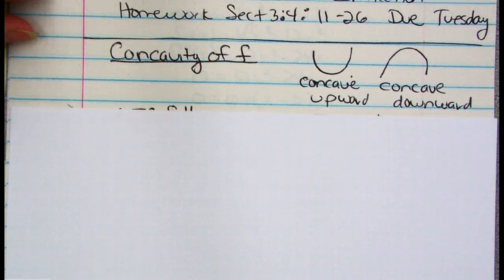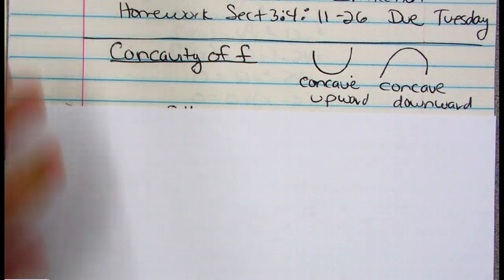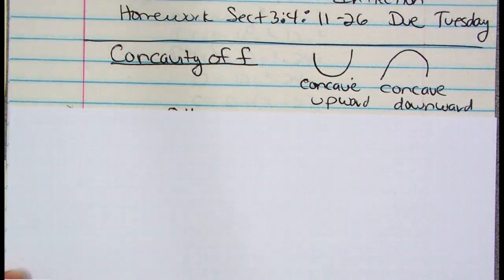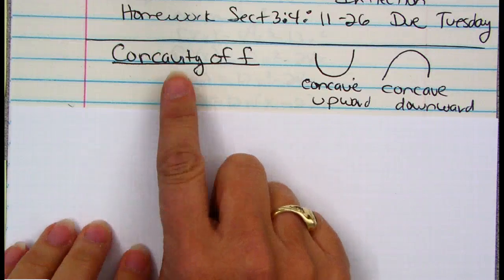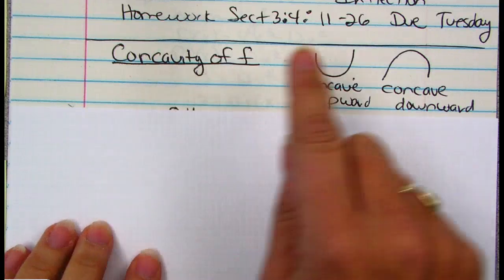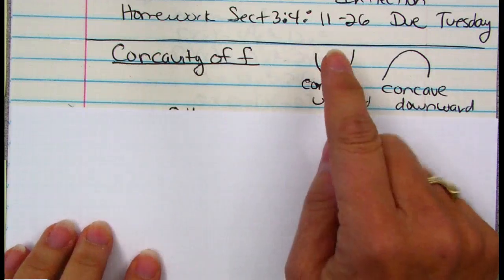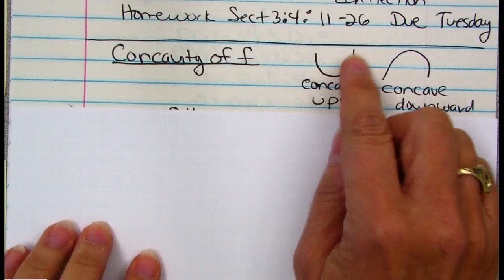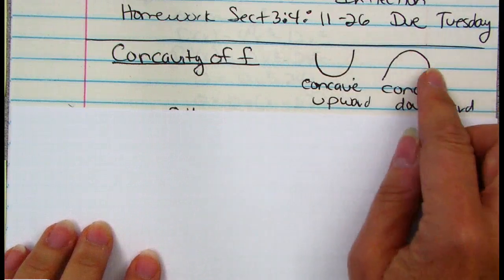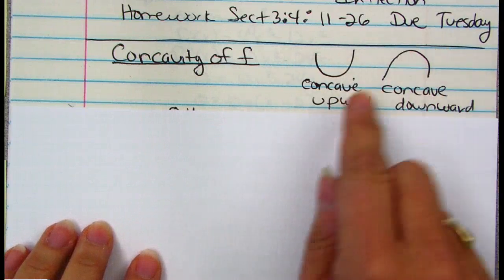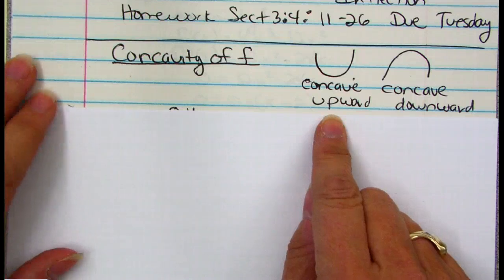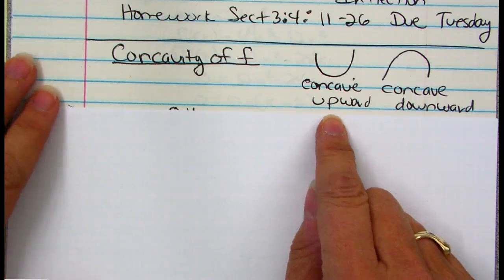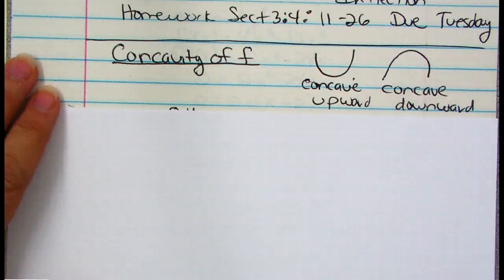Let's talk about concavity of my original function. All concavity means is — back in Algebra 1 and Algebra 2 — if it opened upward or it opened downward. So if it opens upward, we're going to say it concaves upward. If it opens down, we're going to say it concaves downward.